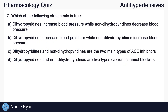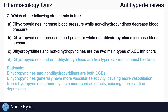Question number seven: which of the following statements is true? The answer here is D. Dihydropyridines and non-dihydropyridines are two types of calcium channel blockers. Dihydropyridines generally have more vascular selectivity, causing more vasodilation, and non-dihydropyridines generally have more cardiac effects, causing more cardiac depression.